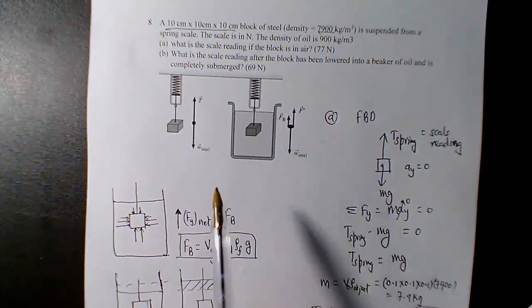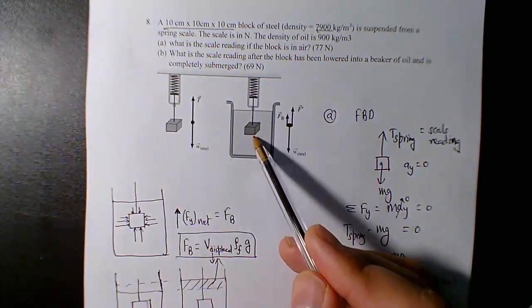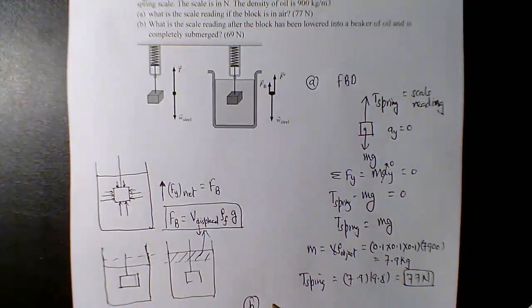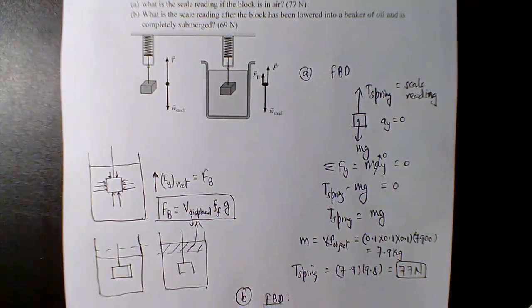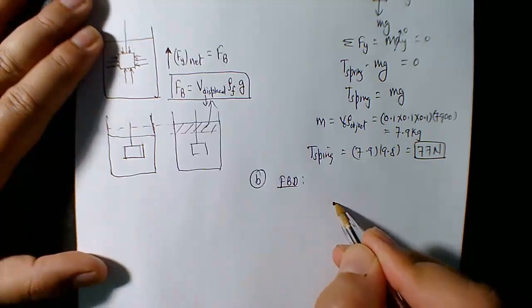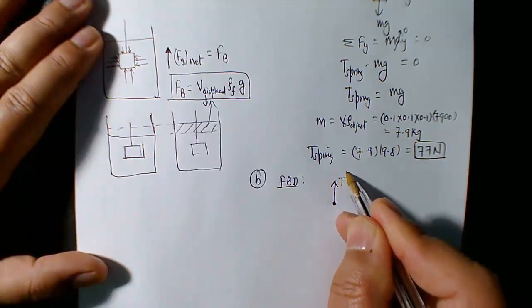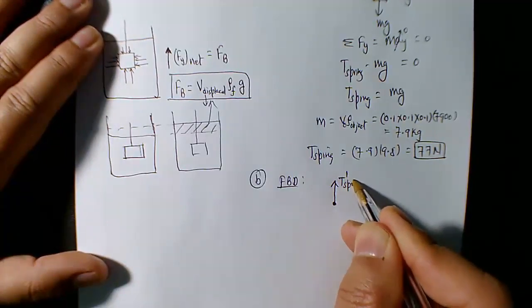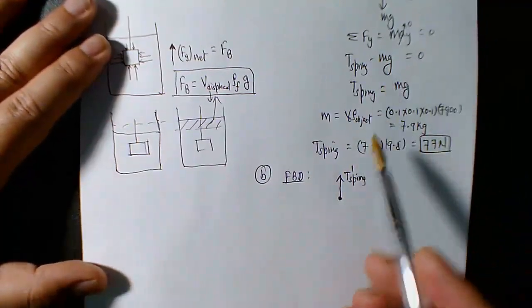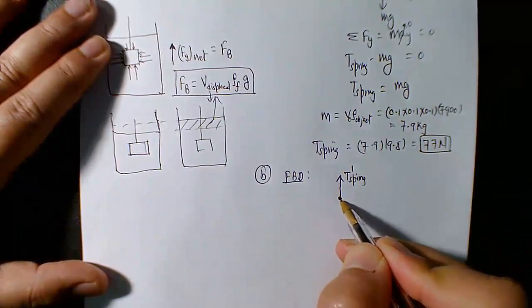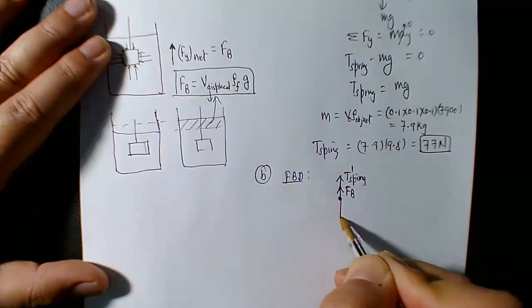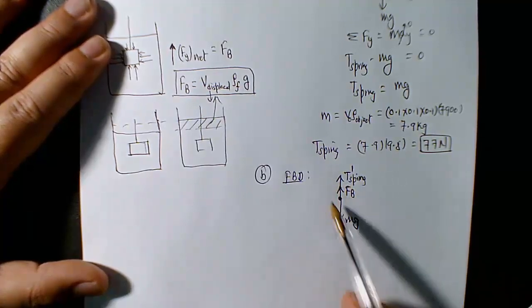Now for the second part: the same block is completely submerged in oil. Oil density is given. What's the new scale reading? Draw a new free body diagram. When the object is completely submerged, you have T′_spring (the new tension), buoyant force F_B upward, and weight mg downward. The tension in the spring will be different from the first case — that's what we're calculating. Since there's no acceleration, applying Newton's second law gives T′_spring + F_B − mg = 0.